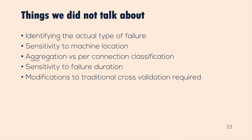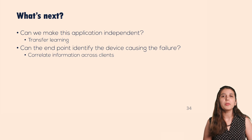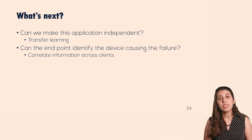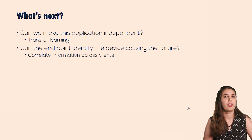There are a number of things we didn't cover. These include identifying the actual type of failure, sensitivity to machine location — can we train in one data center and test in another — and aggregation versus per-connection classification. It turns out that using per-connection data instead of aggregated epoch data causes accuracy to drop well below what we need. We also looked at sensitivity to failure duration and modifications to traditional cross-validation to avoid biases. Looking ahead, we need to eliminate per-application training, which is inconvenient, and we think transfer learning can help with that.